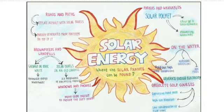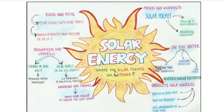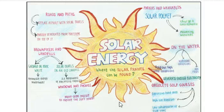Thanks for the mind map. You mentioned solar energy and where solar panels can be found — roads and paths, parks, wearables, solar pocket, windows, phones, golf courses, and on the water. So you got to the point about where solar panels can be found. These are unique, unusual places for solar panels, and that's the main key from the text.